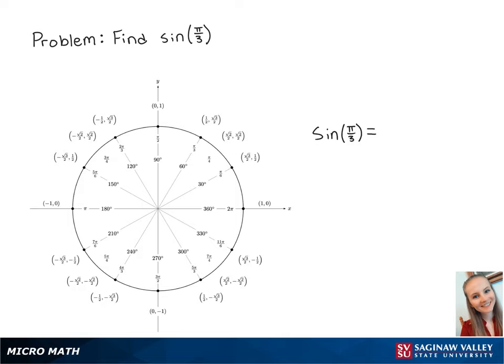For this problem, we're going to find sine of pi over 3. Looking at the unit circle, we can see that pi over 3 lies here. Sine correlates to the y-coordinate on the unit circle. So sine of pi over 3 is equal to the square root of 3 over 2. And this is the final answer.